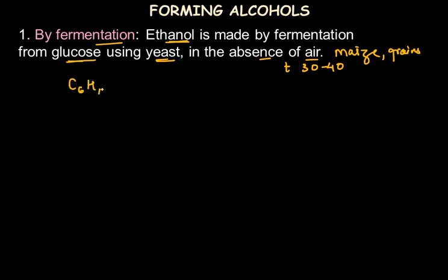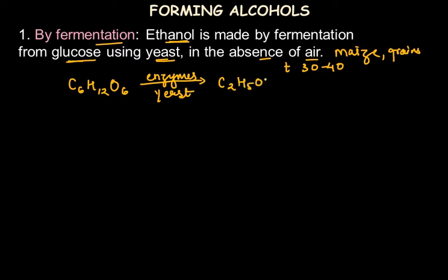Writing the fermentation reaction: glucose (C₆H₁₂O₆), in the presence of enzymes like yeast at the required temperature, produces ethanol (C₂H₅OH) and carbon dioxide as a by-product, and energy is also released because the reaction is exothermic. Balancing the equation requires adding 2 before ethanol and 2 before carbon dioxide, making a total of 6 carbons, 12 hydrogens, and 6 oxygens on each side.